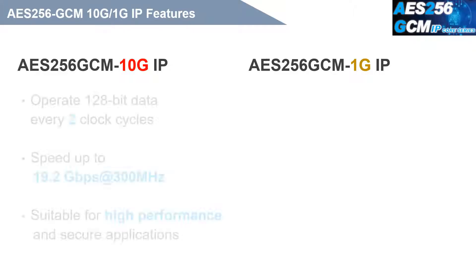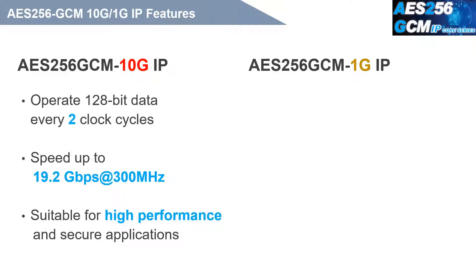There are two products of AES-256-GCM IP for different speed applications. The AES-256-GCM 10G IP can operate on 128-bit data every two clock cycles, with speeds up to 19.2 Gbps at a maximum frequency of 300 MHz. This IP is suitable for high-performance and secure communication applications.